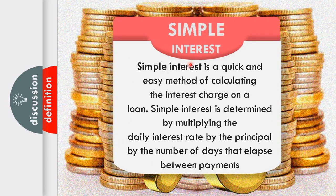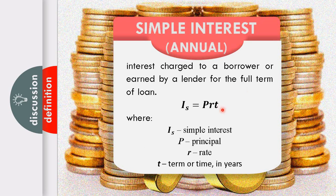Simple interest is a quick and easy method of calculating the interest charge on a loan. It is determined by multiplying the daily interest rate by the principal by the number of days elapsed between payments, or the term. The formula is I sub S equals PRT, where I sub S is simple interest, P is the principal amount, R is the rate, and T is the term or time in years.